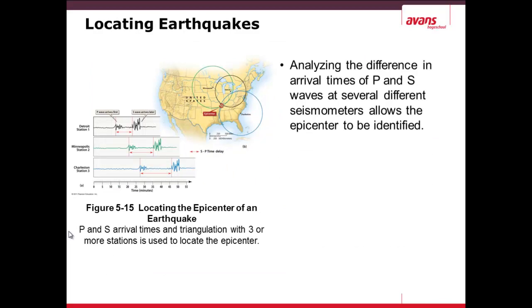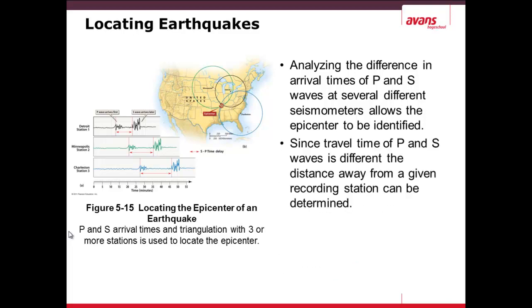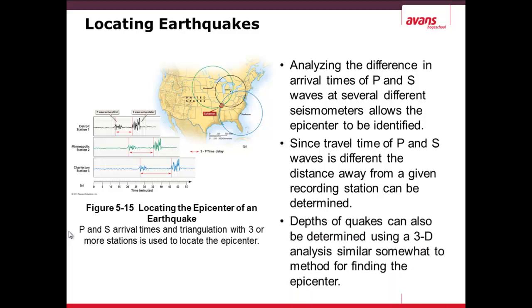To locate earthquakes, you can analyze the P waves and S waves measured by seismometers. This can identify the focus and epicenter of the earthquake. You need at least three seismometers to triangulate the center. These are measured by travel time, as P waves and S waves travel at different speeds over different distances. Depths of the quakes can also be determined to find the exact focus — not just the epicenter — requiring a 3D analysis.